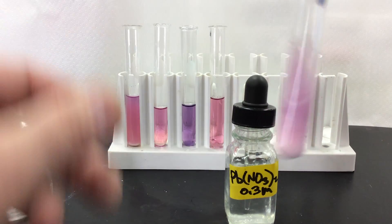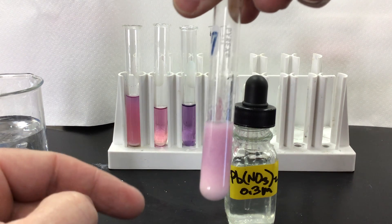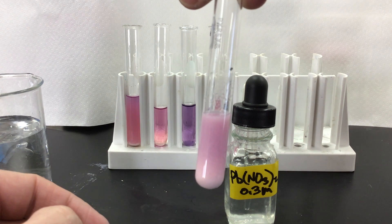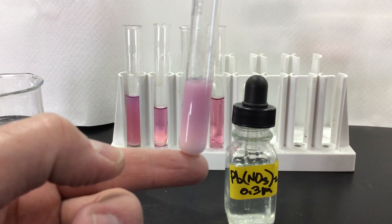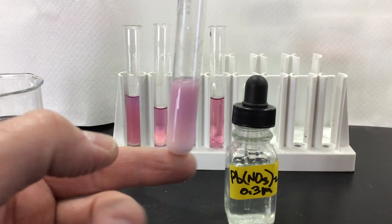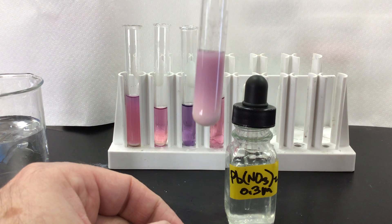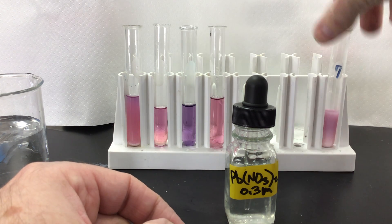So turns cloudy white pretty quickly here, but then definitely turning kind of a pink as well. Again, the white is going to be our precipitate that's forming. If we let this settle out, you'll definitely see more white on the bottom, and then definitely turning pink as well. Good piece of information there.